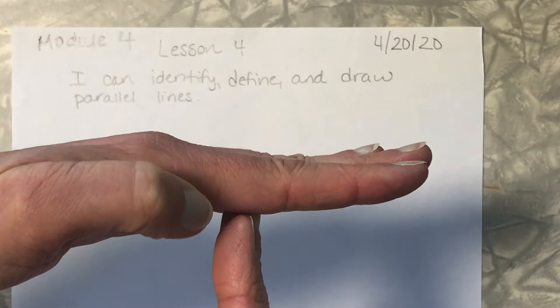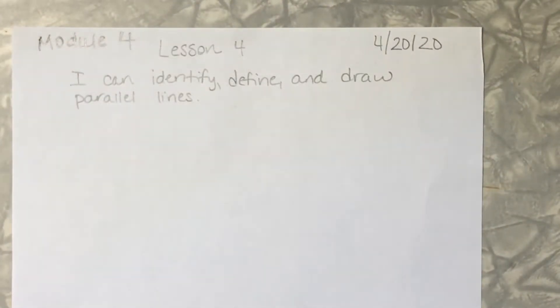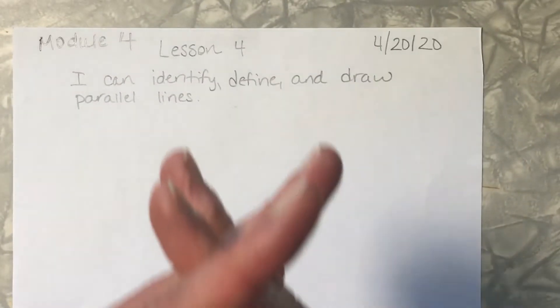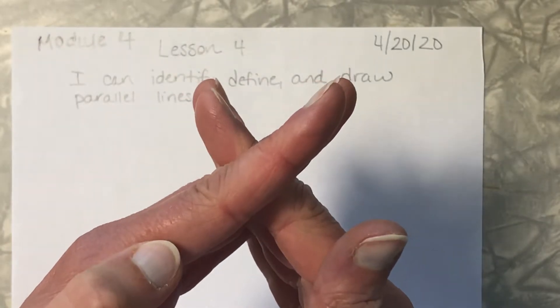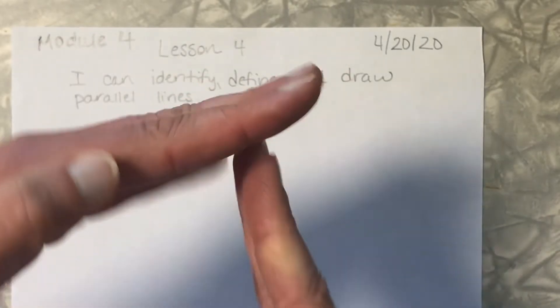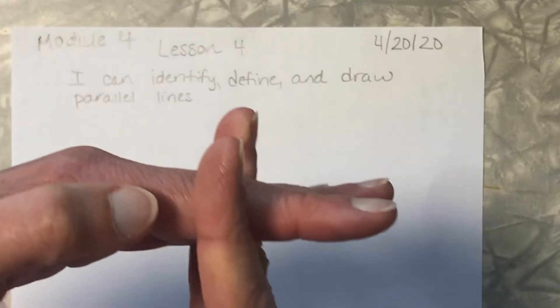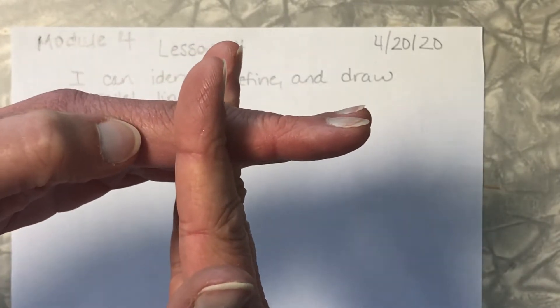We also talked about intersecting lines. Intersecting lines are any lines that cross. Perpendicular lines are lines that cross but form right angles.